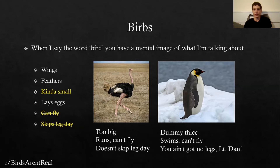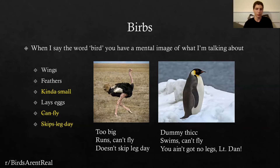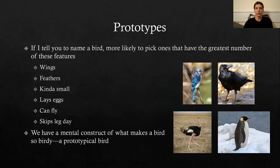On the other hand, we have something like a penguin, which is kind of fat and a little too tall to be your typical small bird. They swim and they don't fly, and this penguin here very clearly does not have any legs, so Forrest Gump would be very supportive. Those are some kinds of birds, and if I tell you to name a bird, you're most likely going to pick a kind that has the greatest number of the features you normally associate with the word.